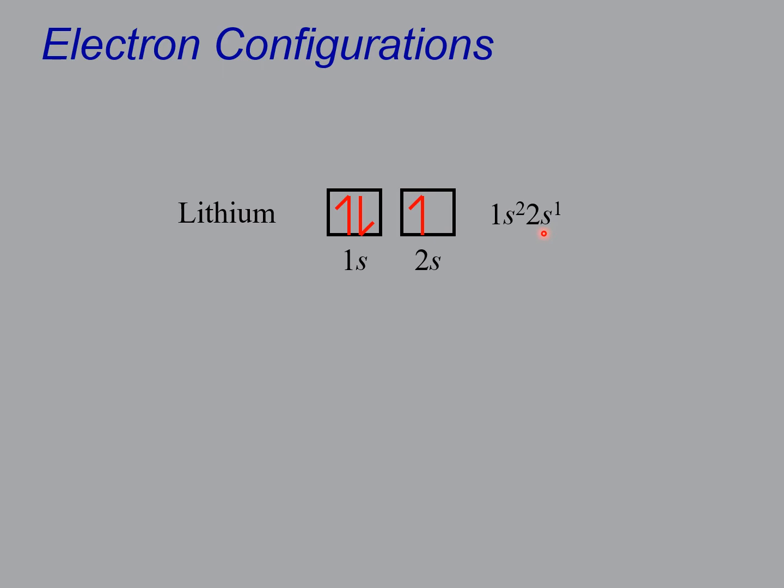Now I can throw some more vocabulary at you. The outermost electrons, the last ones that you add in, remember these things are getting increasingly further and further away from the nucleus, these are called valence electrons. And the ones that are not on the outermost shell are called core electrons. This is important because these are the ones that do the chemistry. And so the number and the type of valence electrons that an element has tells you a lot about how it's going to act.